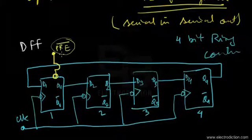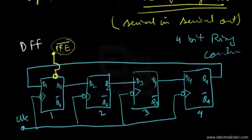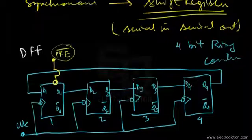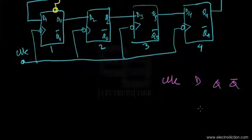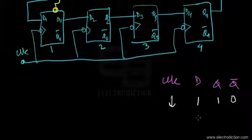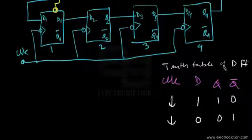The preset input is an active-low input to the flip-flop. Upon applying an active-low signal at the preset input, D flip-flop 1 outputs a logic-level one, so Q1 is set to logic one upon activation of the preset input. Looking at the truth table of the D flip-flop: when D equals one, Q is set to one and Q-bar to zero; when D equals zero, Q is set to zero and Q-bar to one.